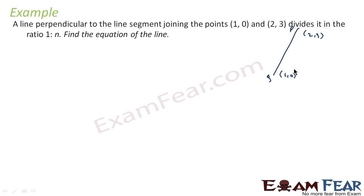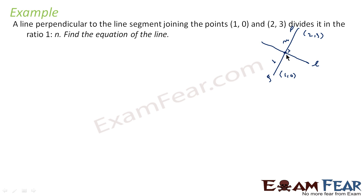This is line PQ. The question says a line perpendicular to the line segment divides the line in ratio 1 to n, and is perpendicular. We have to find the equation of line L. Let us draw the diagram first. We need at least one point and the slope of line L to find the equation. This point we can find — let us suppose this point is S.